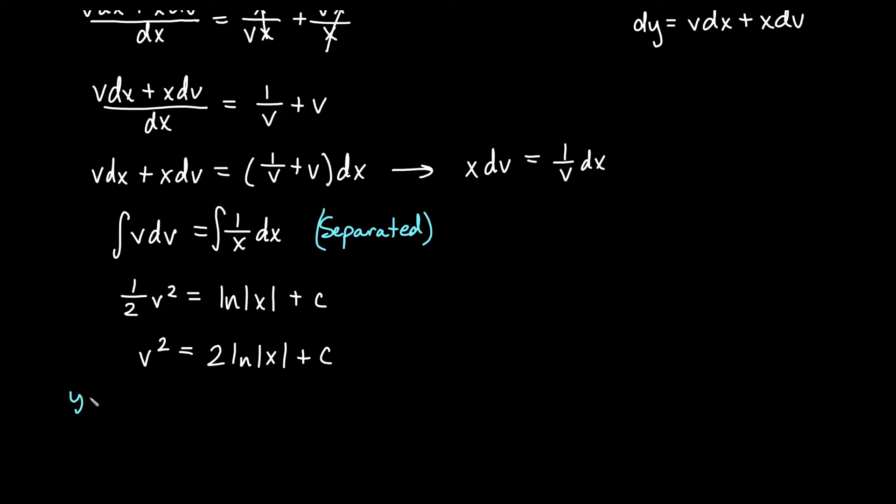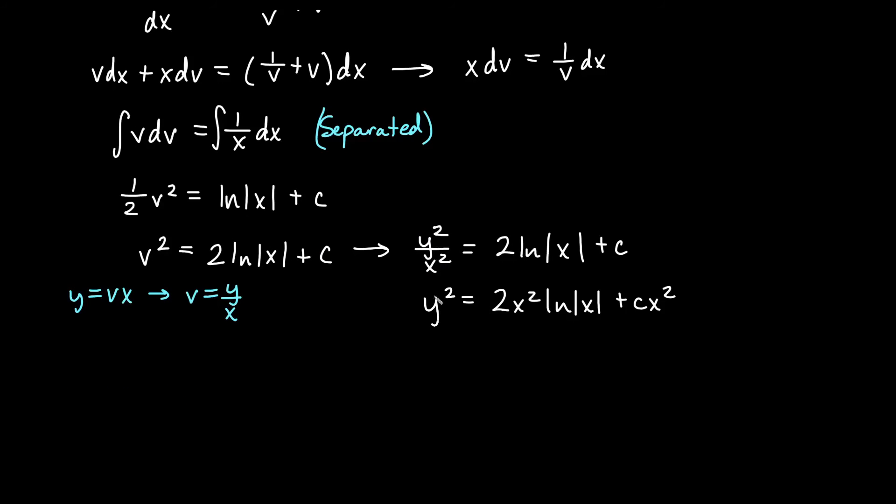So remember our original substitution was that y equals v times x. So what is v? Because I want to get back in terms of y and x. Well, v would just be y/x, wouldn't it? So let's go ahead and replace our v now that we've integrated. So we'll go ahead and call this y squared over x squared, would be v squared, equals 2 ln of x plus c. And now I think I should multiply by x squared on both sides. So y squared is equal to 2x squared ln absolute value x plus our constant times x squared. And we could of course go ahead and square root both sides if we want. So we could say y is equal to positive or negative square root of 2x squared ln of x plus our cx squared term.